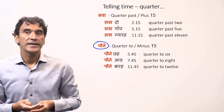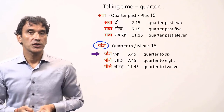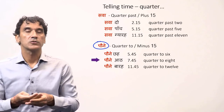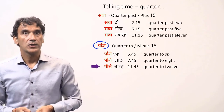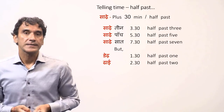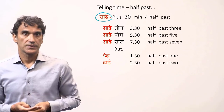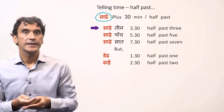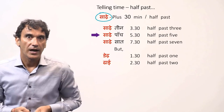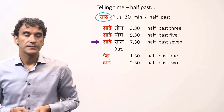The word paune is used to express quarter to an hour: paune chhe — quarter to six, paune aat — quarter to eight, paune bara — quarter to twelve. For half past, the word sade is used: sade teen — half past three, sade paanch — half past five, sade saat — half past seven.